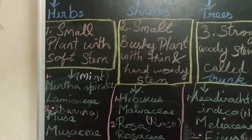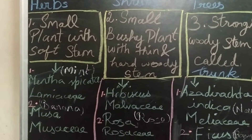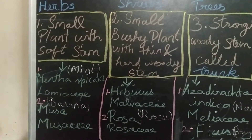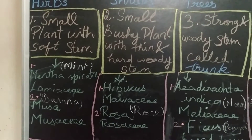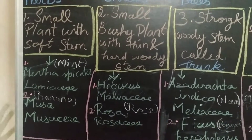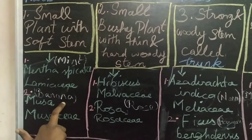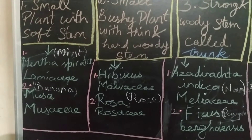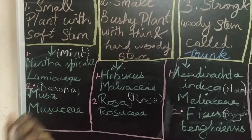The first type is Herbs — small plants with soft stems. The Mint binomial name is Mentha, and the family is Lamiaceae. The Banana's binomial name is Musa and the family is Musaceae.